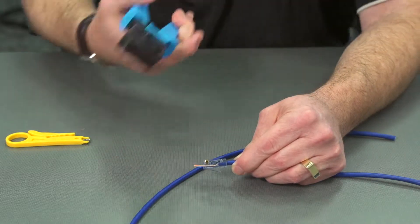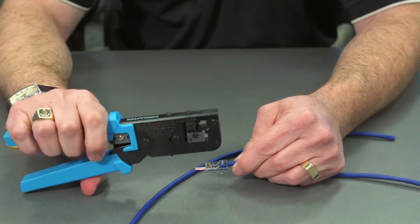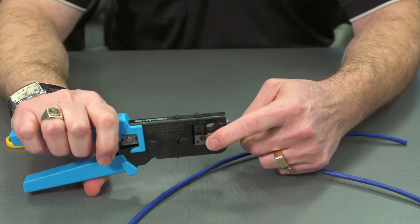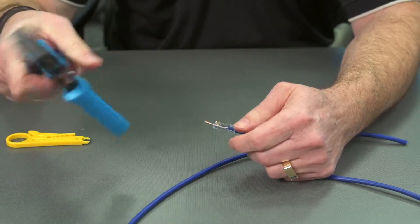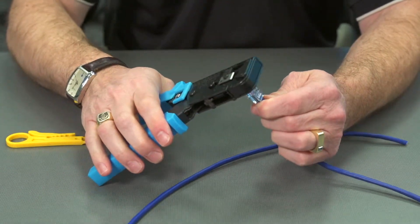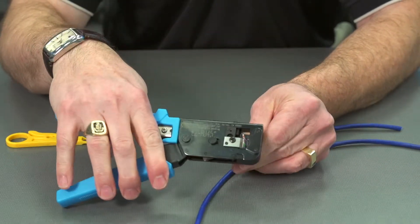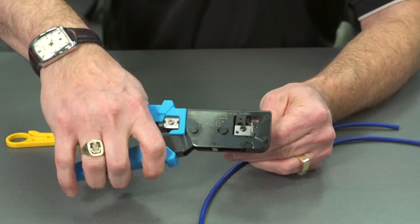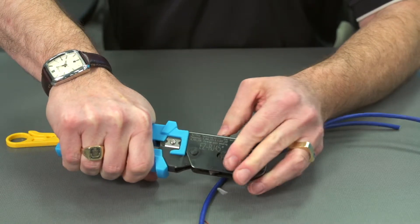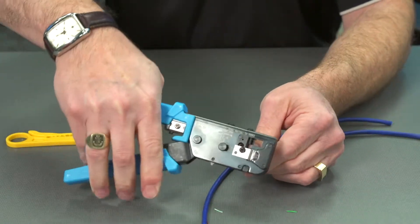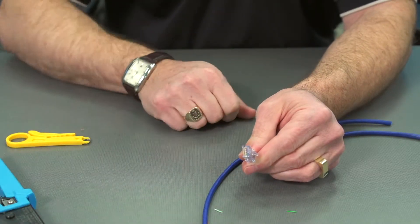Now the EZ connector crimp tool has a razor blade in the front. So we're going to put this in, and you'll see how those stick out right to the razor blade. And then by squeezing it, it trims off those cables. And now we have the connection.